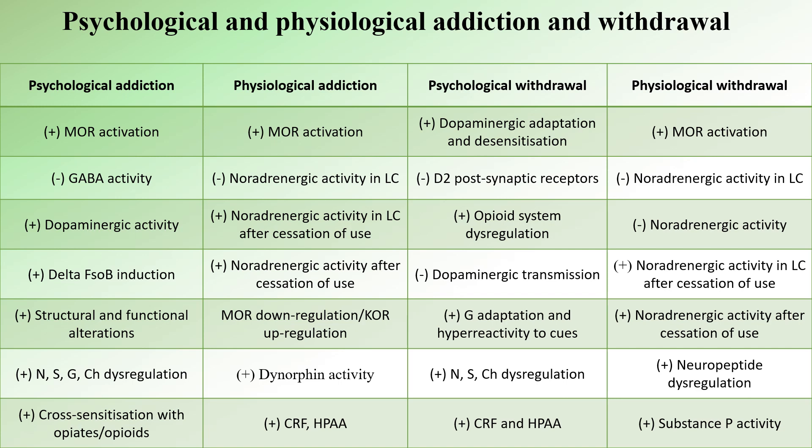Psychological withdrawal from Kratom shares similarities with other drugs, regulated by the adaptation and desensitization of the dopaminergic system. Over time the brain becomes accustomed to increased dopamine levels caused by Kratom use, with a decrease in D2 receptor availability aiding this adaptation, contributing to a hypodopaminergic state. The glutamatergic pathway becomes hypersensitive to environmental cues associated with Kratom use, causing a sudden spike in glutamatergic activity that intensifies cravings during abstinence. Increased CRF levels causing HPA hyperactivity further aggravate the overall severity of psychological withdrawal symptoms, including anxiety and irritability.